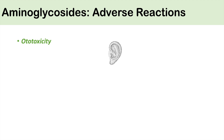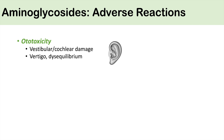The aminoglycosides have specific adverse reactions to recognize. One is ototoxicity — aminoglycoside use can lead to vestibular and cochlear damage, causing symptoms of vertigo and disequilibrium, tinnitus (ringing of the ears), and even hearing loss. For these reasons, we try to avoid aminoglycoside use whenever possible. However, there is some evidence that using N-acetylcysteine alongside the aminoglycoside can reduce some of this ototoxicity.